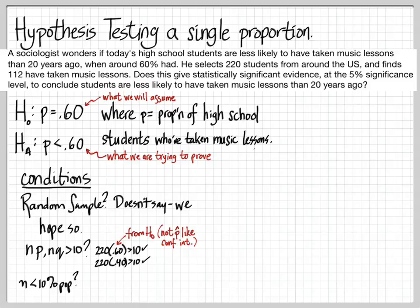The last condition is the same as before: sample size less than 10% of the population. That's clearly true here — 220 is less than 10% of all high school students. Those are the conditions.